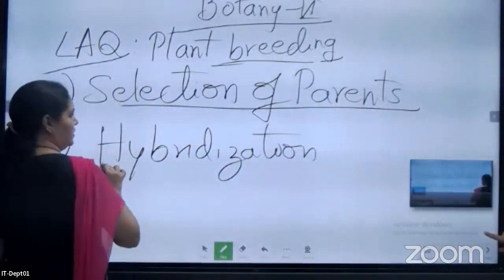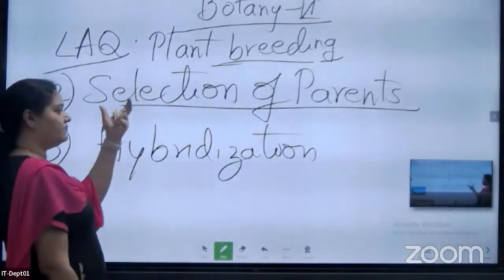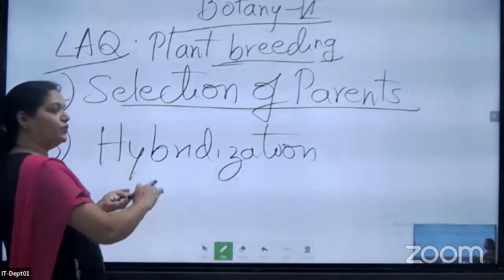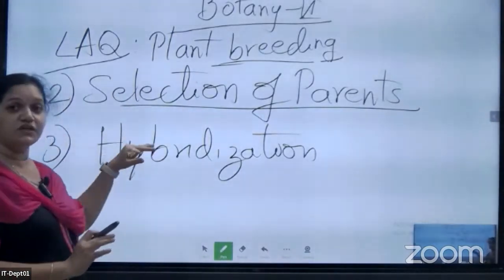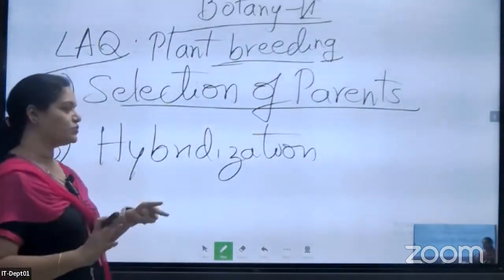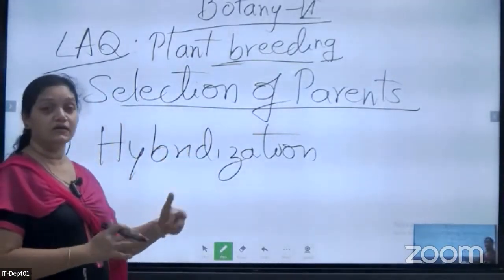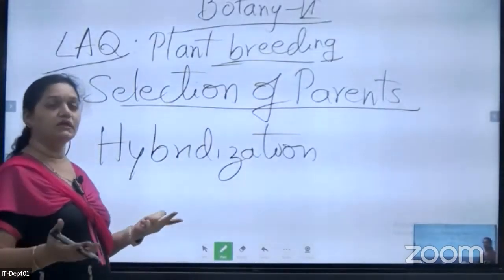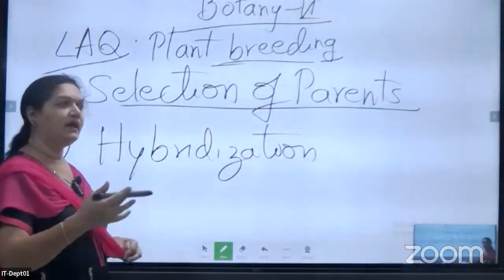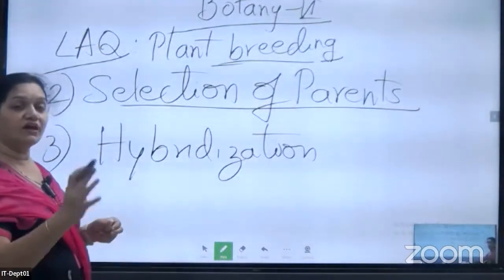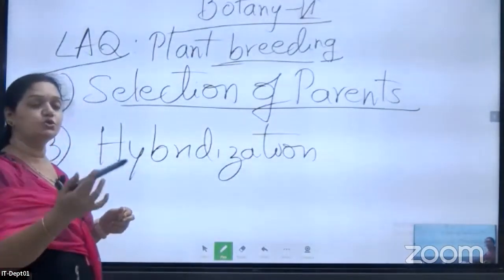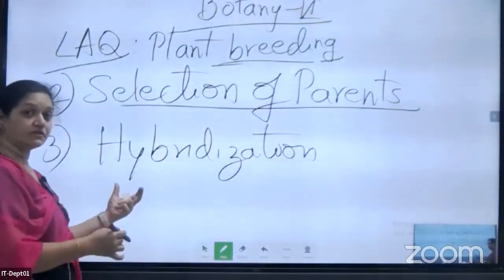The third step is hybridization. Once we have collected the germplasm and selected the parents, we will do hybridization. This process is the artificial hybridization. Once the parents are selected — consider two parents, male and female — but the plants we selected are bisexual plants. We have to make one parent completely the female parent and the other considered as the male parent.